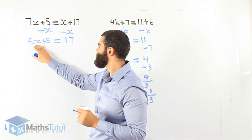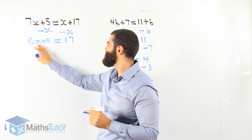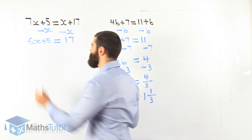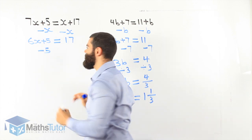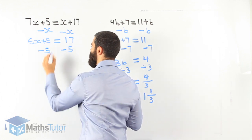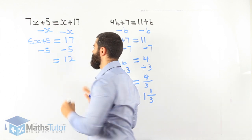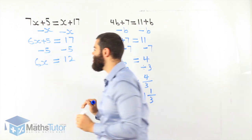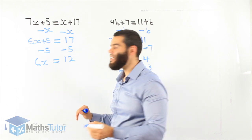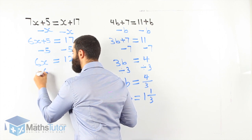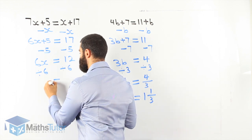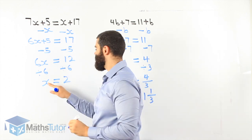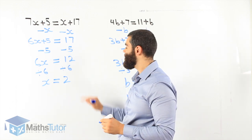Now we move on. 6x plus 5 equals 17. We want to leave x by itself. Which do we start with — the 6 or the 5? We look for the furthest one away from x, which is 5. Positive 5 becomes minus 5 — the opposite of plus is minus. Minus 5 on the other side too. 17 take away 5 is 12, and 5 take away 5 is gone. We're left with 6x equals 12. 6x is 6 times x, so we divide by 6 on both sides. 6 divided by 6 is 1, so 1x, and 12 divided by 6 is 2. x equals 2.